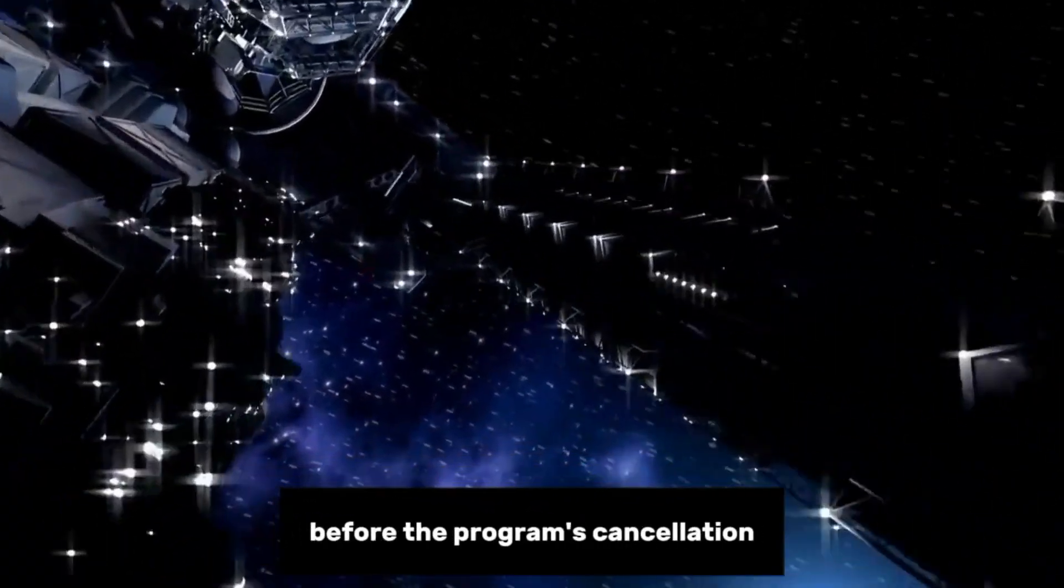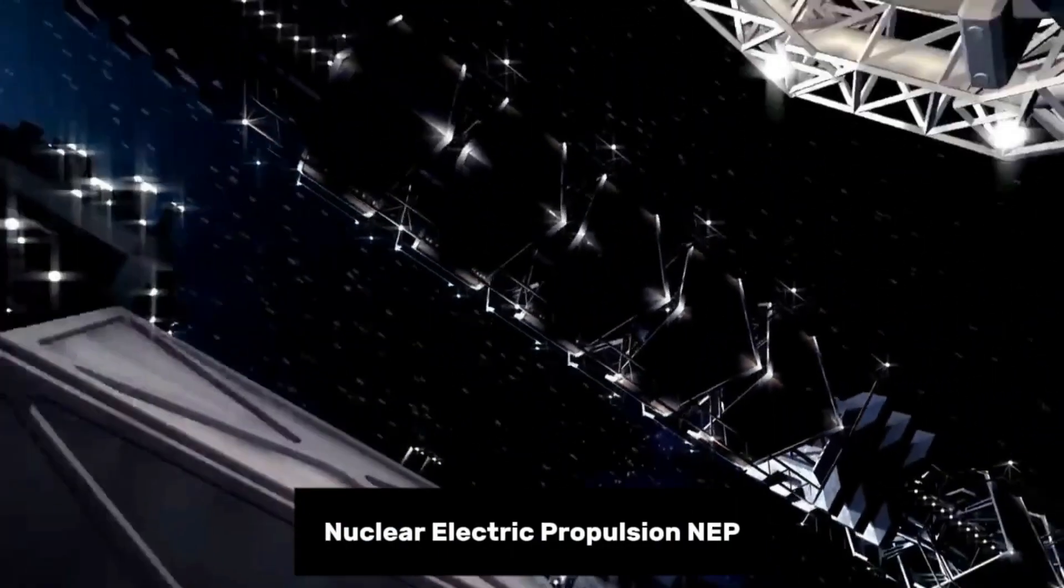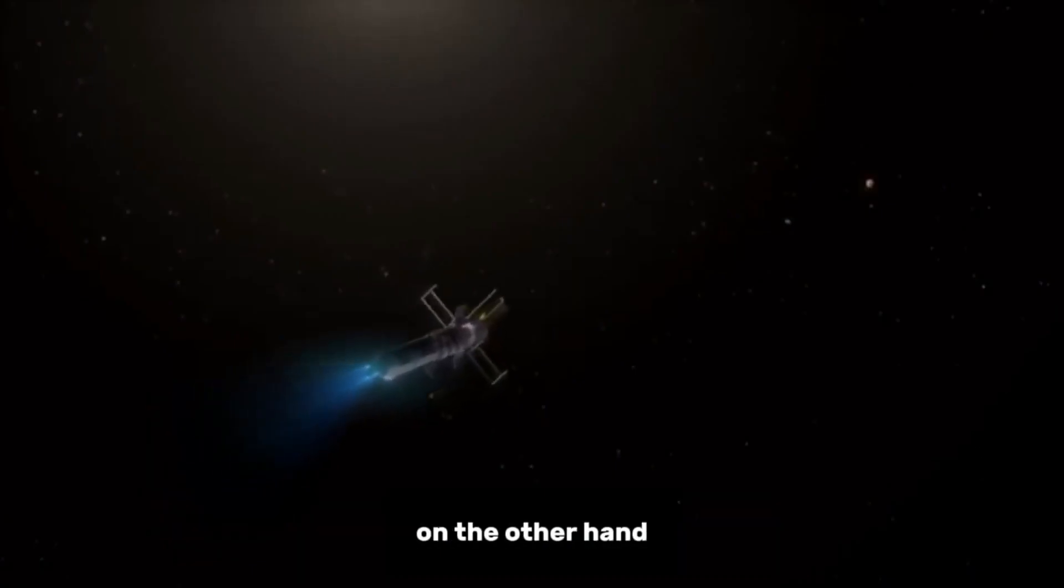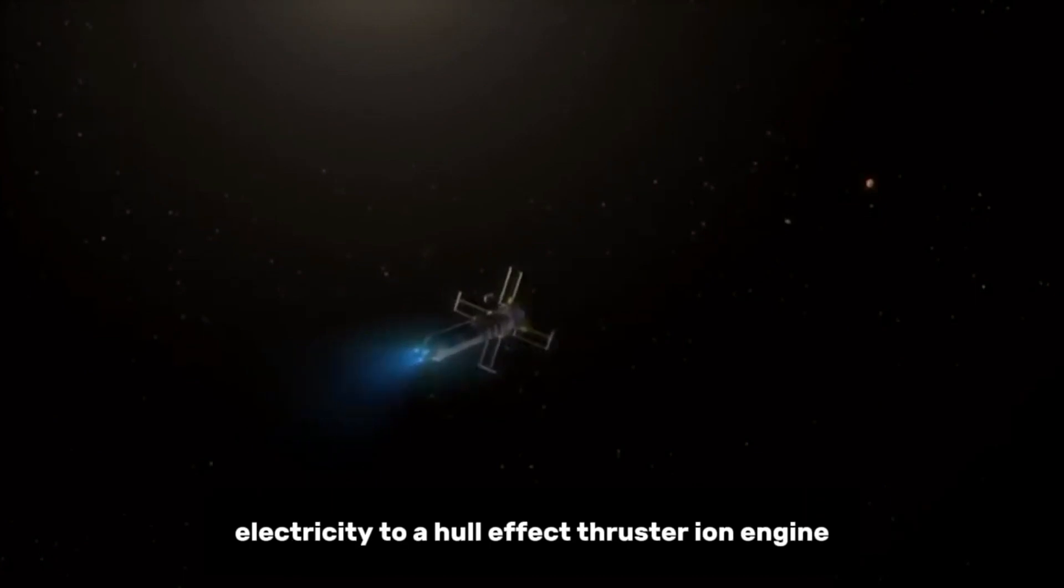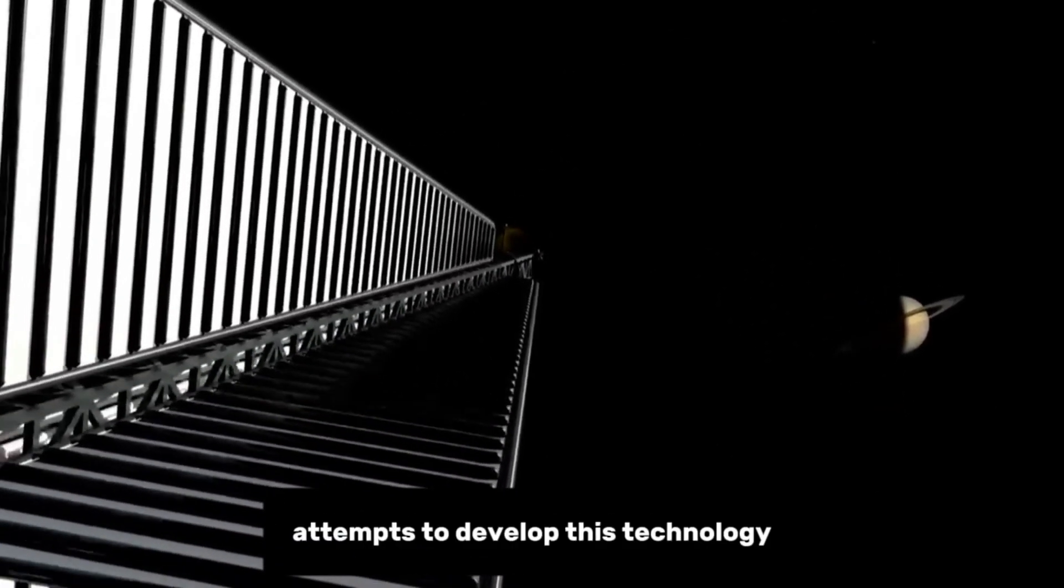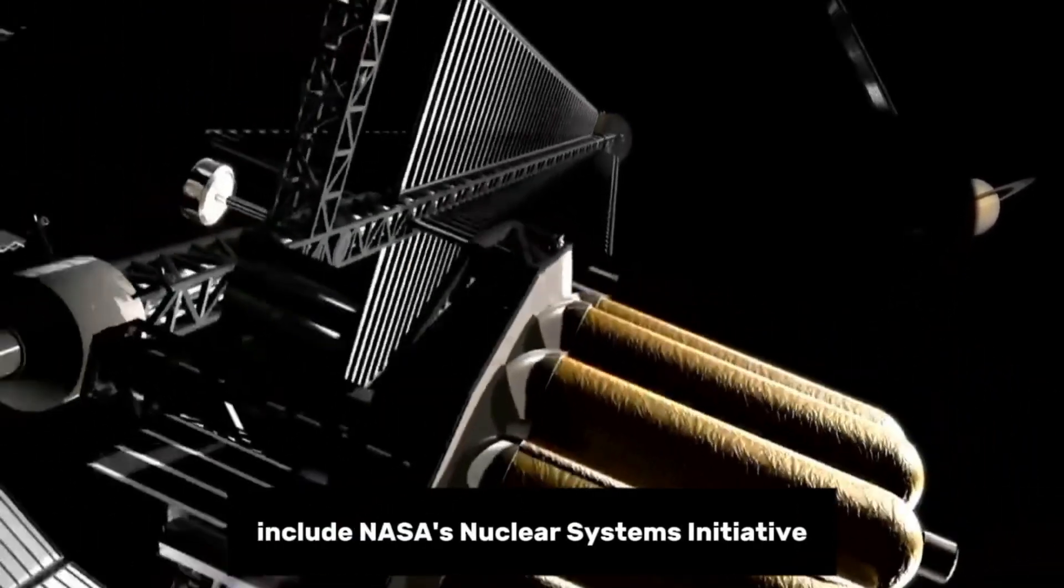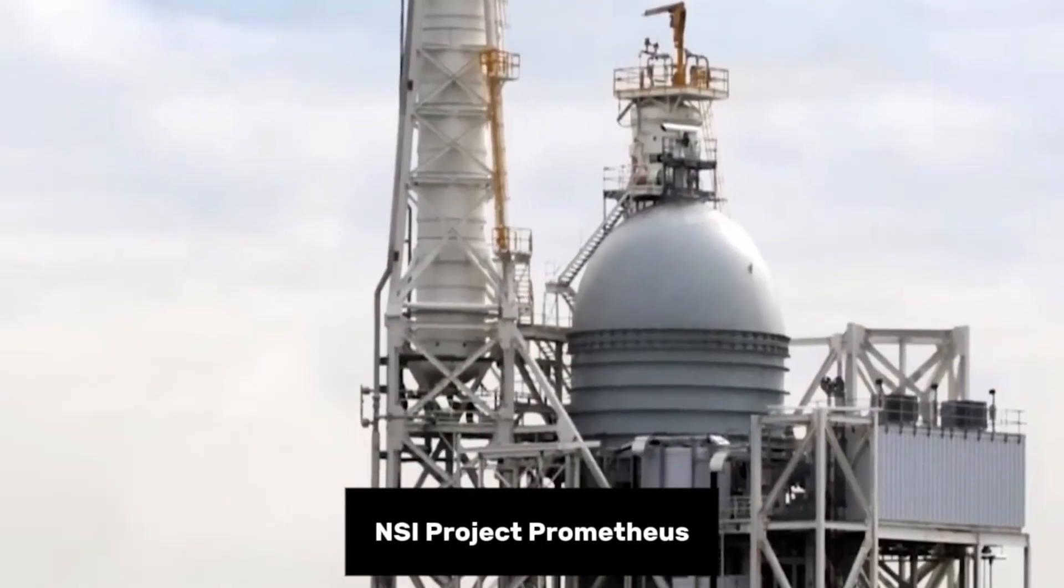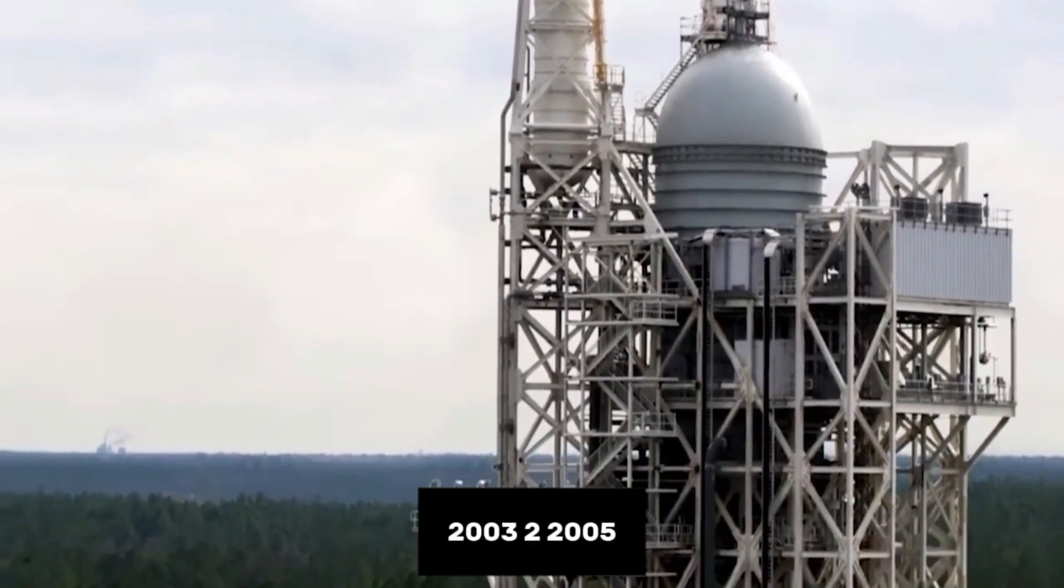Nuclear electric propulsion (NEP), on the other hand, relies on a nuclear reactor to provide electricity to a Hall effect thruster (ion engine), which generates an electromagnetic field that ionizes and accelerates an inert gas like xenon to create thrust. Attempts to develop this technology include NASA's Nuclear Systems Initiative (NSI) Project Prometheus (2003 to 2005).